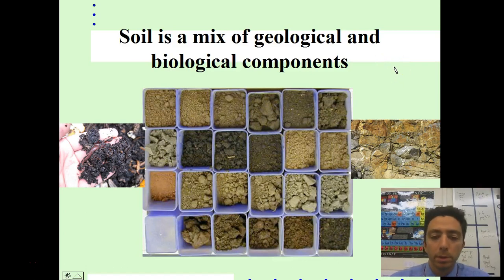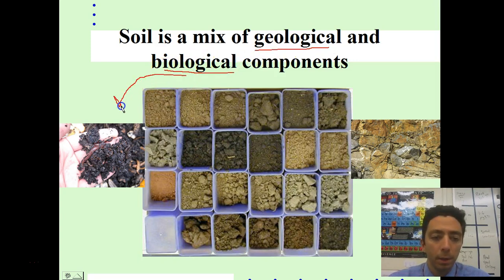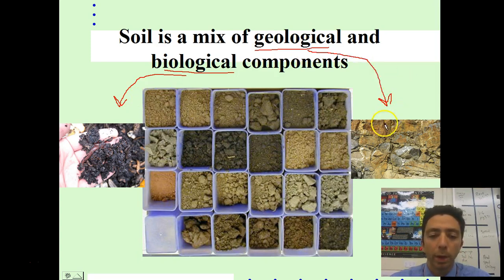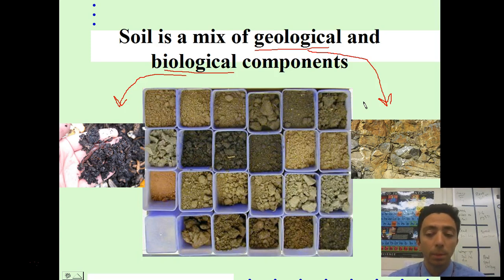Hello, welcome to the video on soil. This is part of chapter 12: food, soils, and pests. Soil has a mixture of two major parts: the geological and biological components. Biological refers to anything living or dead that's in the soil. Geological refers to the rocks and sand that are breaking down. We'll talk about what soil is, how it forms, how we use it, and where it comes from in this video series.